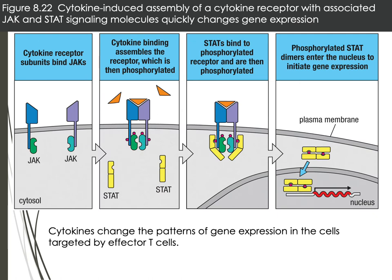The JAK-STAT pathway is a common signaling pathway in immune cells. Cytokine receptors bind JAK, which becomes phosphorylated, causing STAT to become phosphorylated, leading to translocation of transcription factors and gene activation. Just as NF-κB is a key transcription factor, the JAK-STAT pathway is commonly examined for immune cell activation because it is triggered by cytokines binding their receptors.